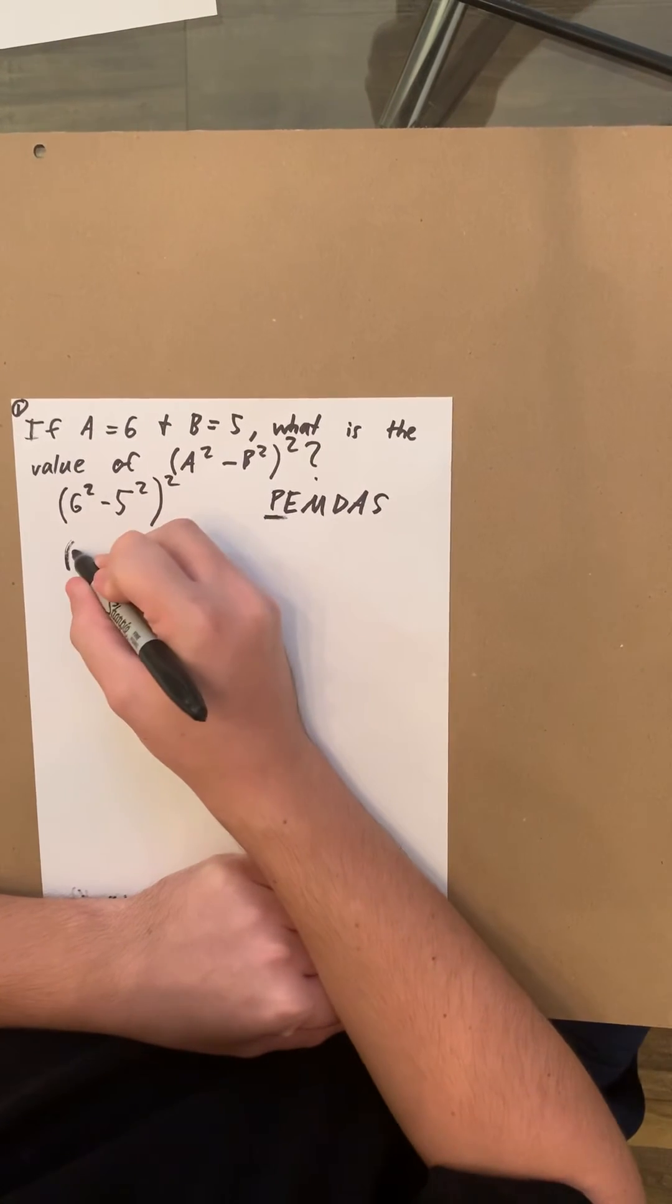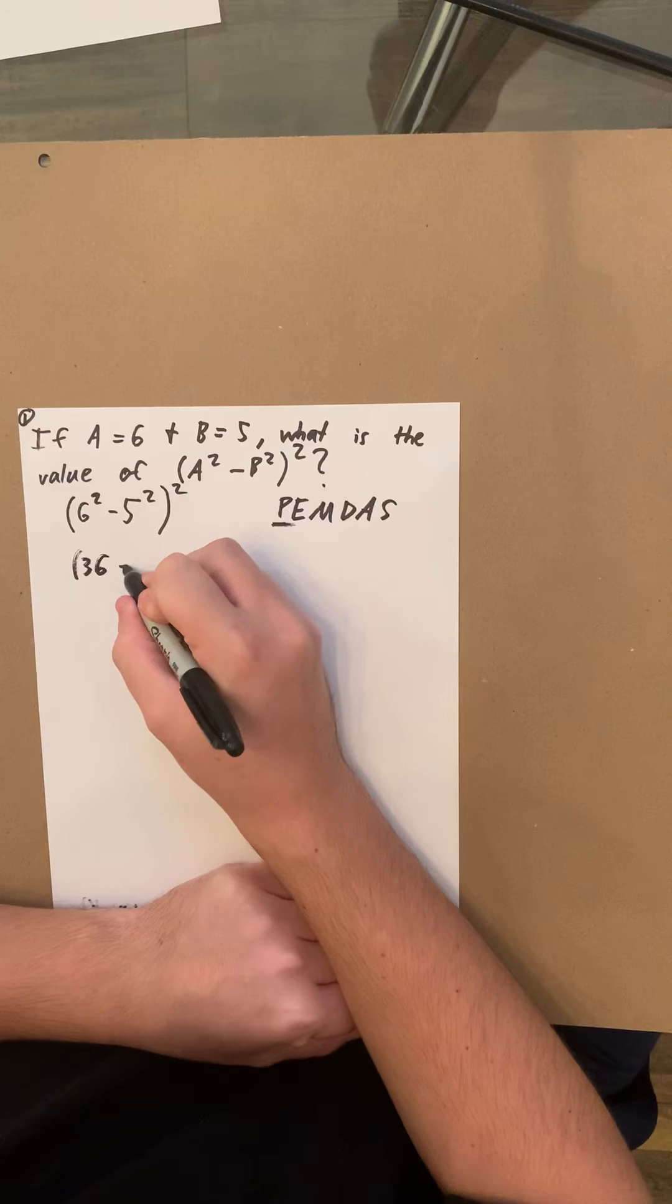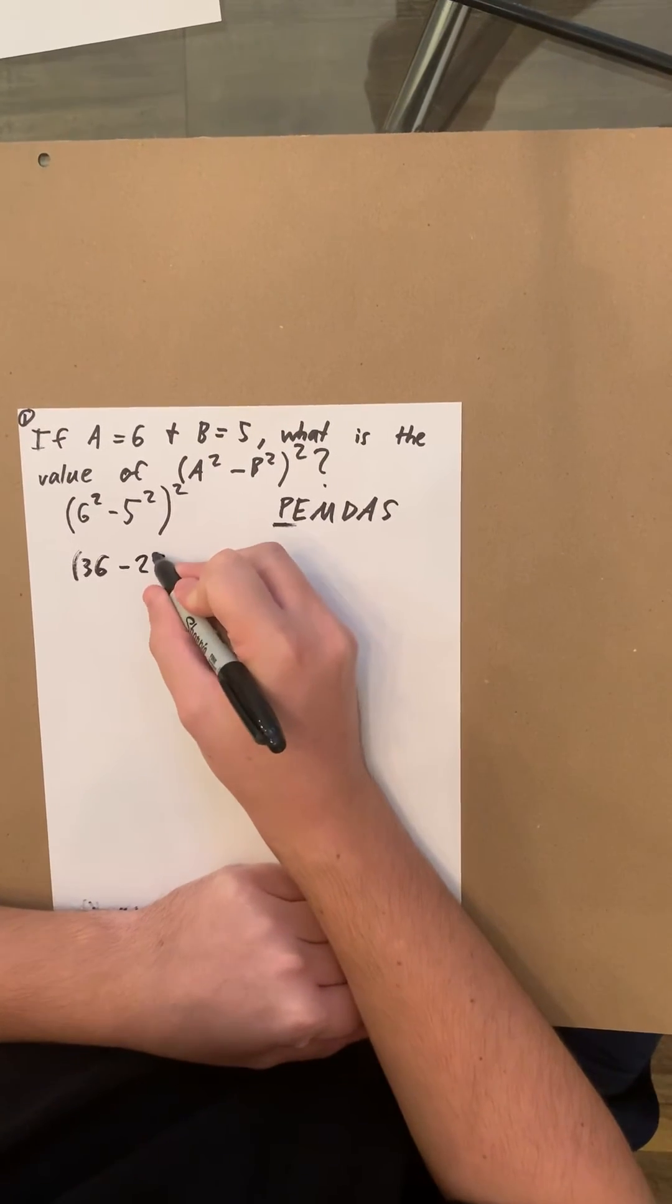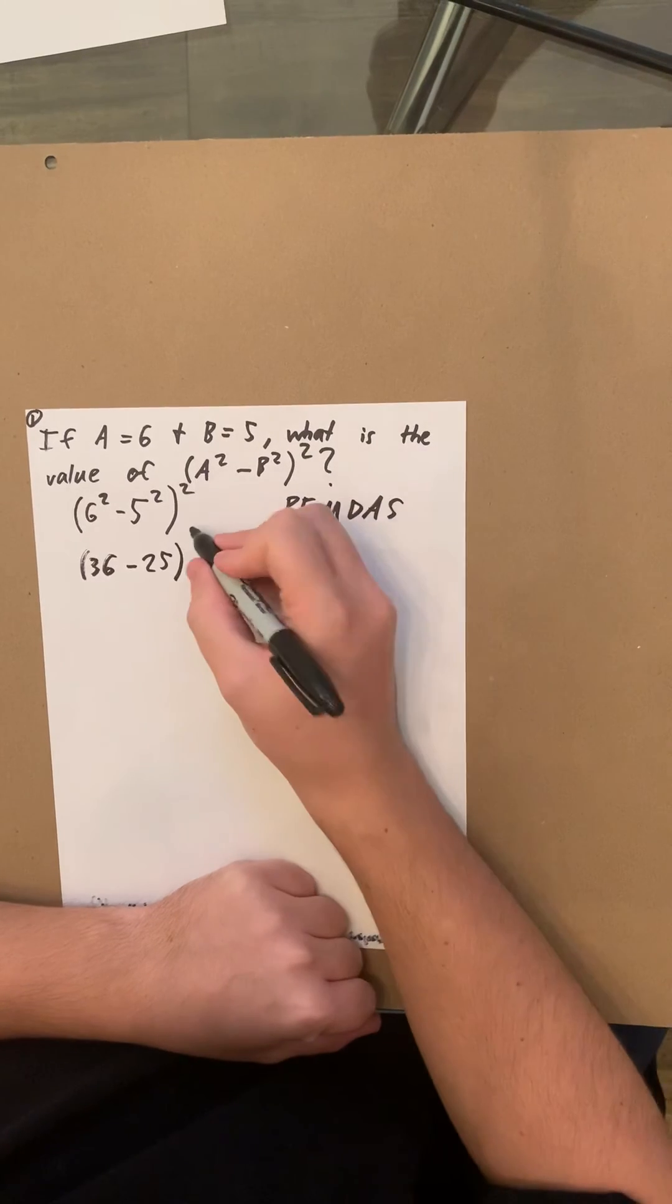So, 6 squared is 36, 5 squared is 25, and it's still going to be a subtraction. And then that's going to be squared.